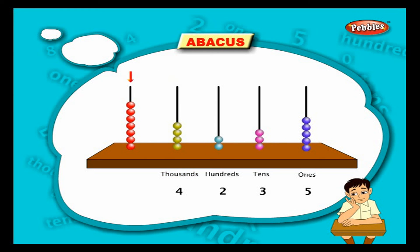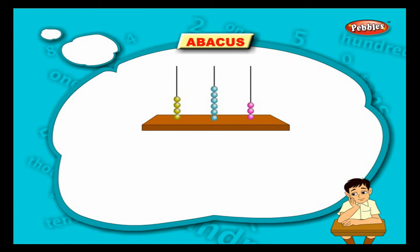The leftmost wire represents the ten thousands place — there are seven red balls there, meaning there are seven ten thousands. So we get the number seventy-four thousand, two hundred and thirty-five. Now let us read the abacus and write the number.